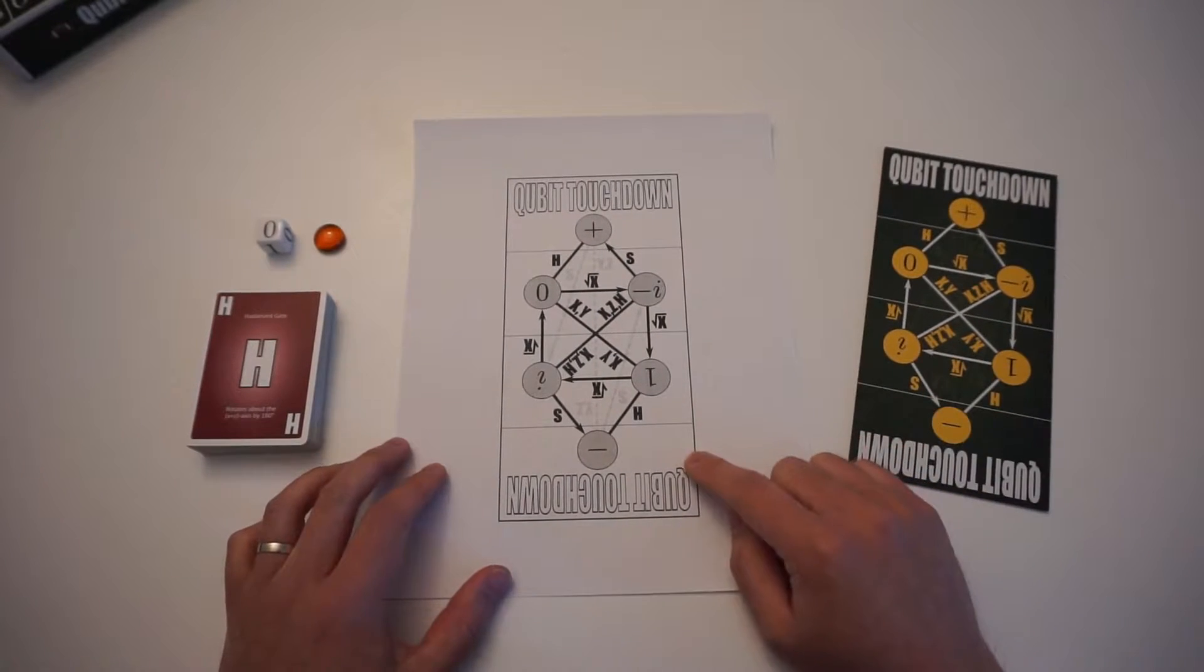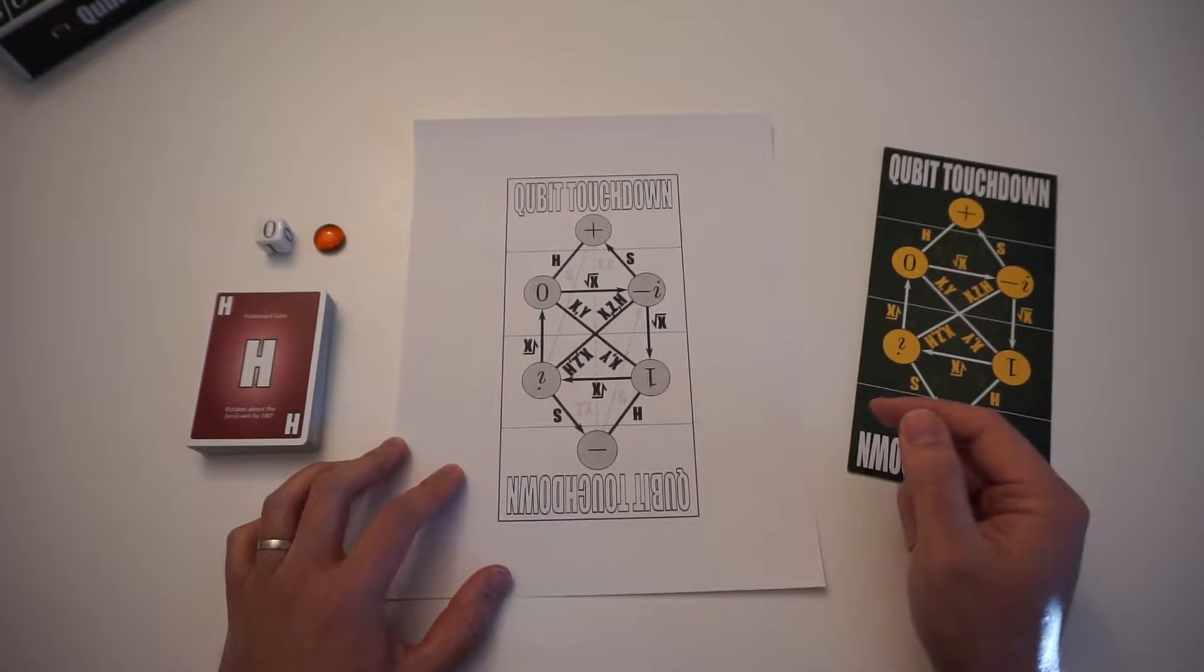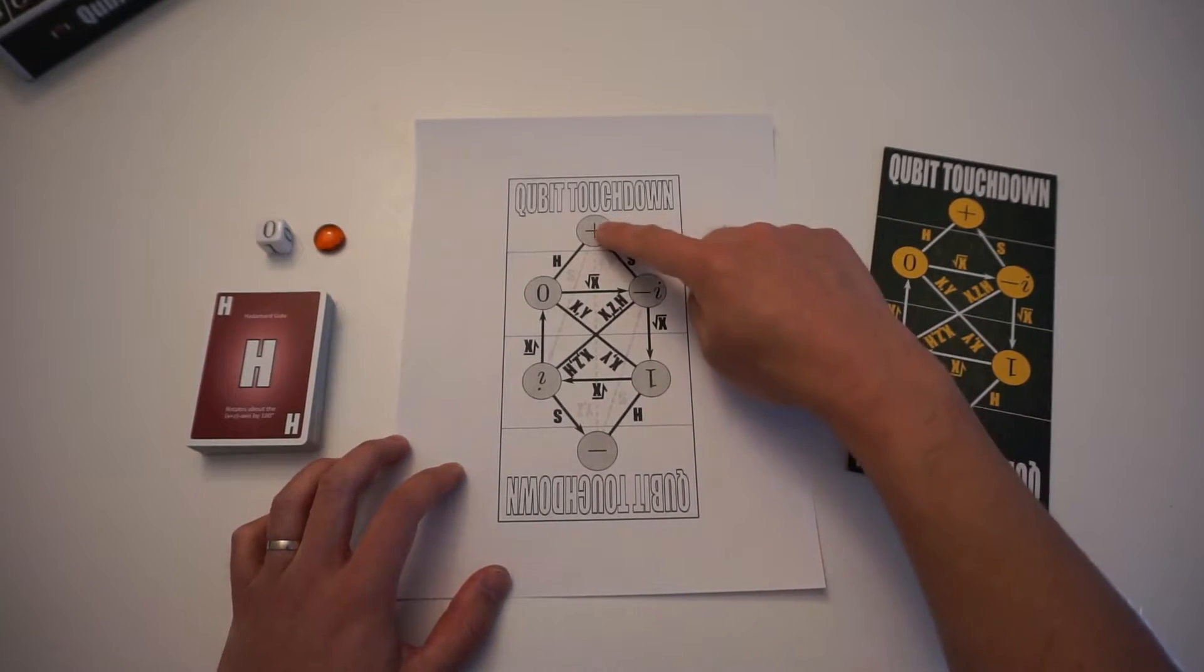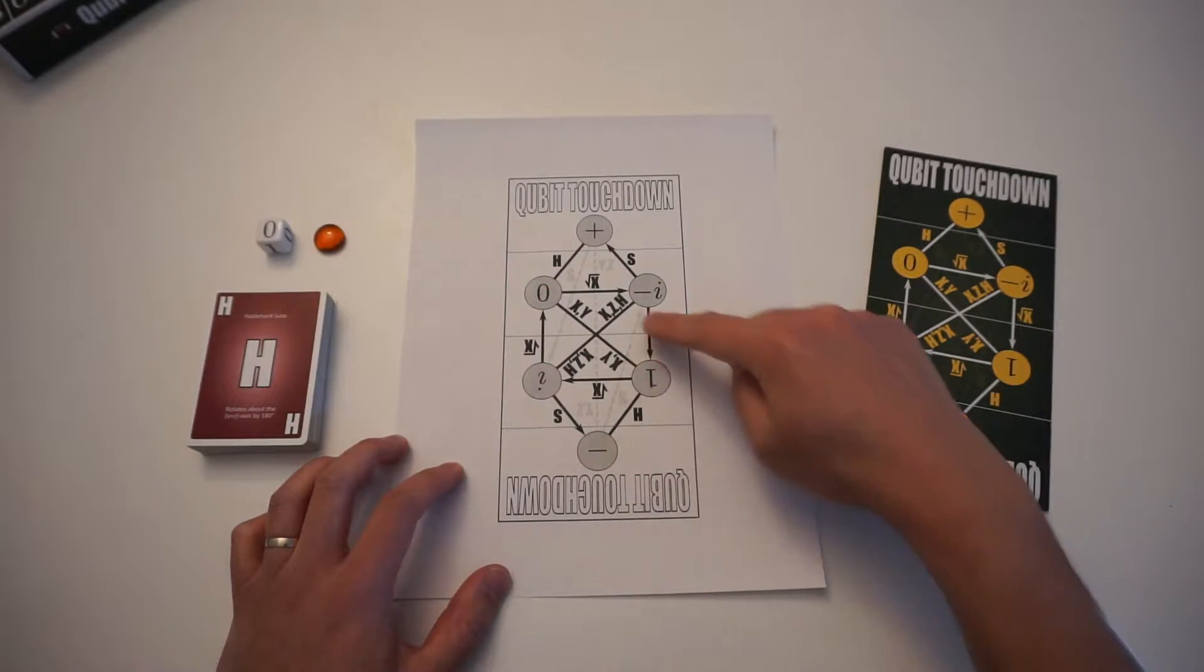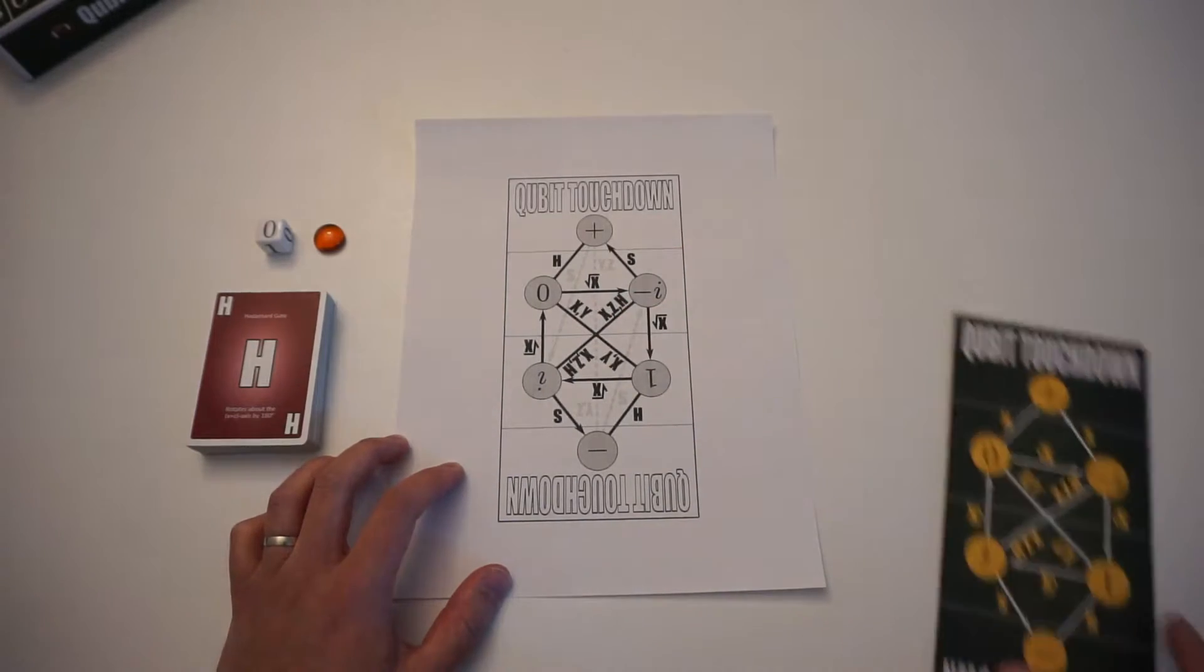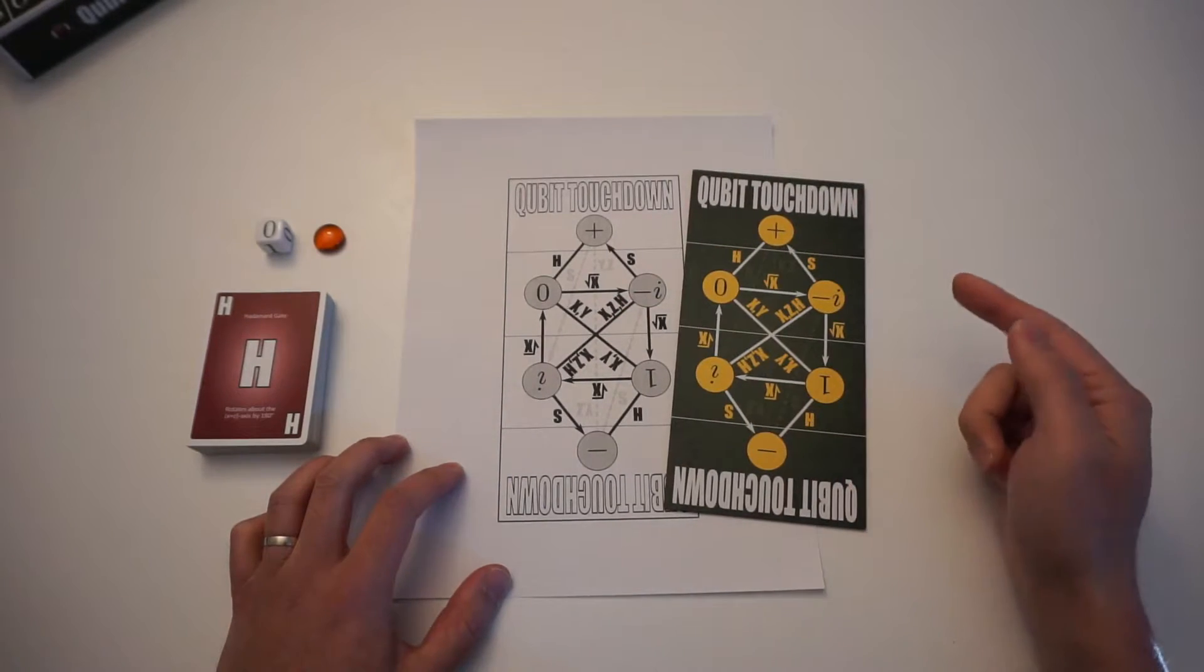Or, if you want, if you don't have access to a printer, you can just get a piece of paper and you can draw this board yourself. All you really need are these six positions and these black arrows here, or on the original game board, they would be white arrows.